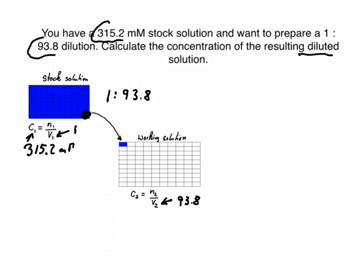We know that the number of moles that we transfer is the same, so n1 equals n2. And therefore we can write C1 V1 equals C2 V2, because this gives us the number of moles here.